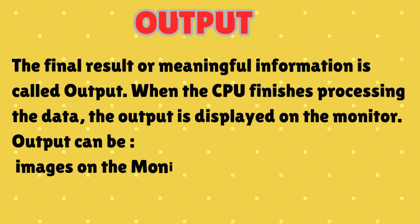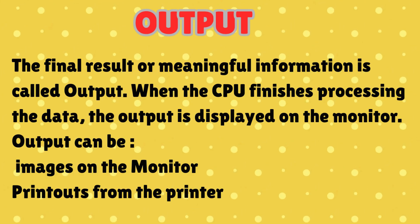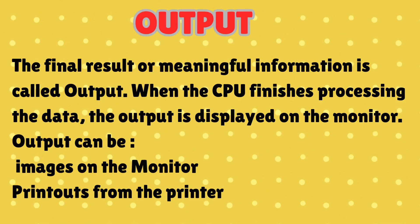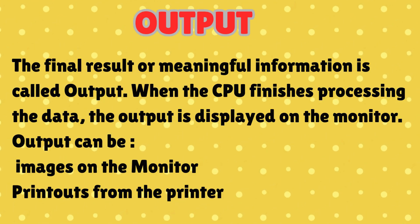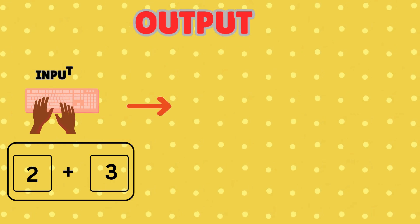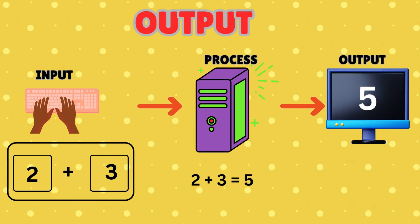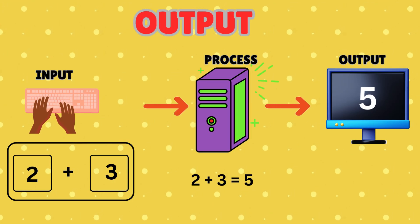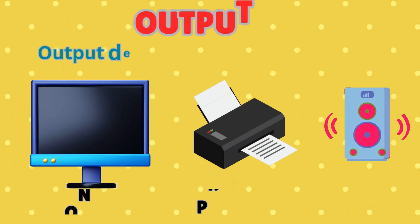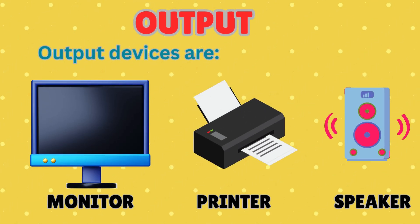The final result or meaningful information is called output. When the CPU finishes processing the data, the output is displayed on the monitor. Output can be images on the monitor or printouts from the printer. For example, after typing 2 plus 3, you see the answer 5 on the screen. That is output. Some of the output devices are monitors, printers, and speakers.